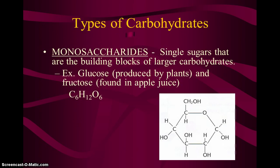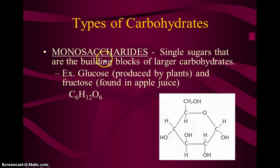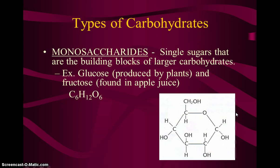Types or categories of carbohydrates: monosaccharides, disaccharides, and polysaccharides. Saccharide means sugar, so a monosaccharide is a one-sugar unit, or a single sugar — this is the simplest type of carbohydrate. Glucose is a good example, and here's a picture of what a single glucose molecule looks like.